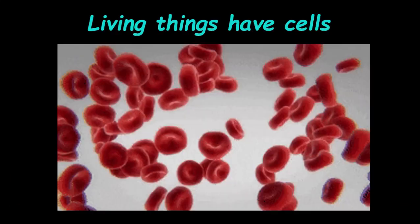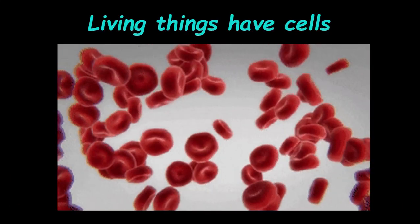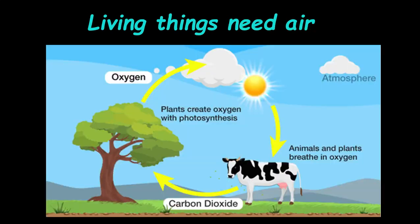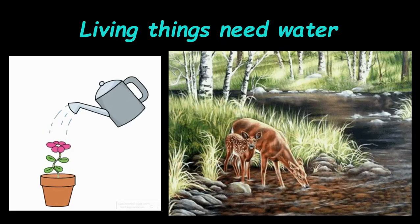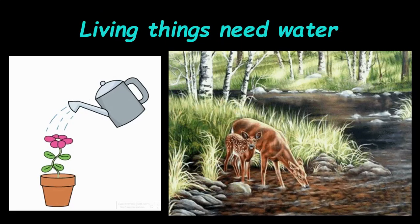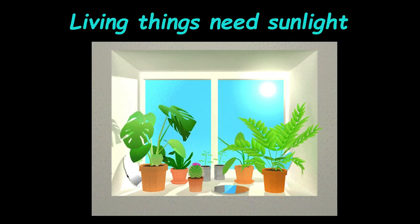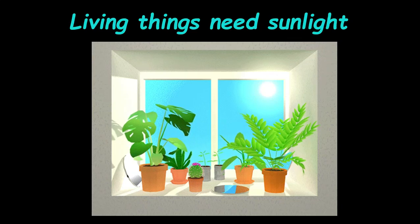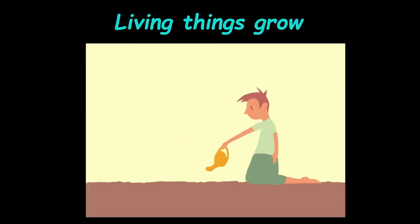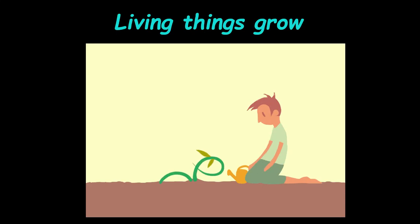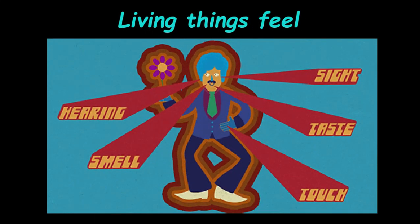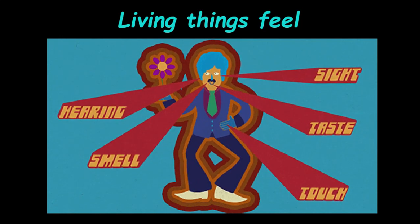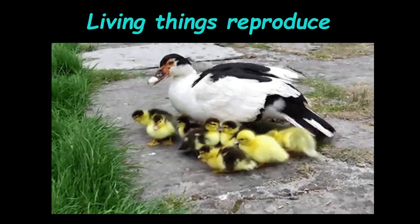Living things have cells. Living things need air. Living things need nutrients. Living things need water. Living things need sunlight. Living things move. Living things feel. Living things reproduce.